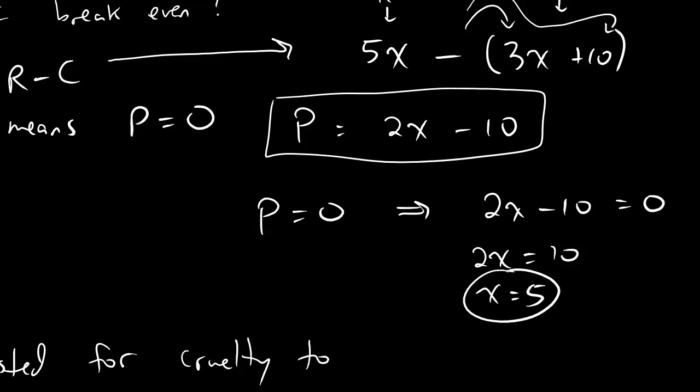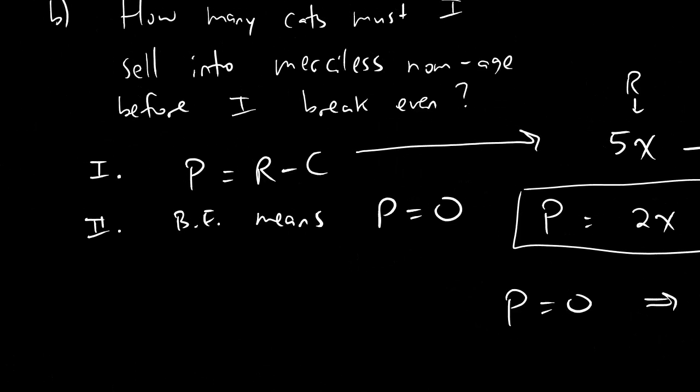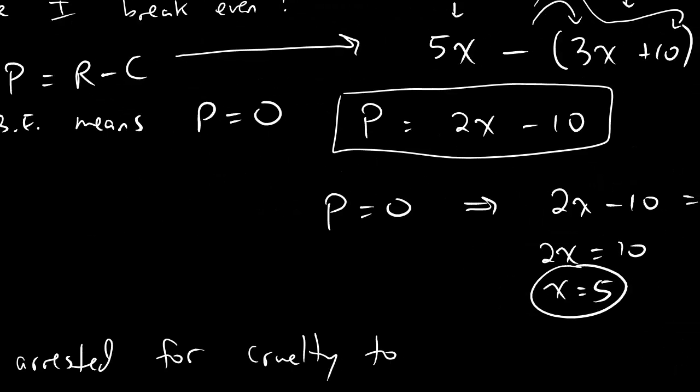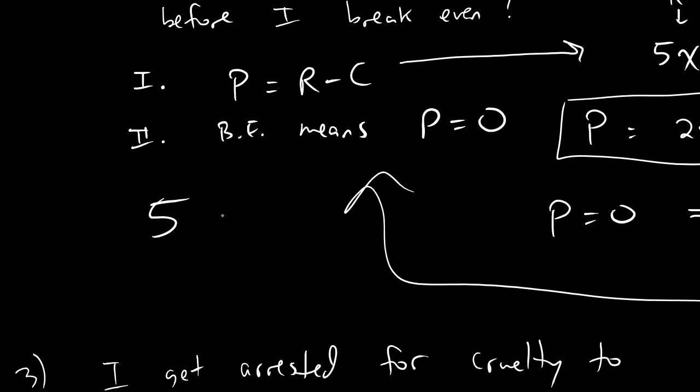So we got the value x equals 5, now let's go back and see what we're asked. What we're asked is, how many cats do I have to sell in order to break even? Well, x precisely means number of cat burgers. So actually, our answer is just x equals 5, no big deal. 5 cats.